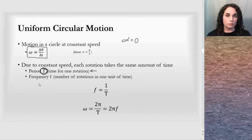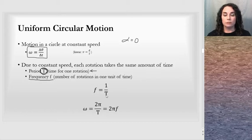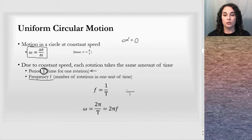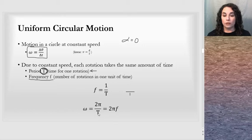An associated quantity used to define motion is called frequency. Frequency is related to the period with an inverse relationship — it is the number of rotations in one unit of time. We can relate these: omega is the angular displacement over a period of time, and for one period the object rotates through 2π radians, giving us 2π over the period for angular speed.